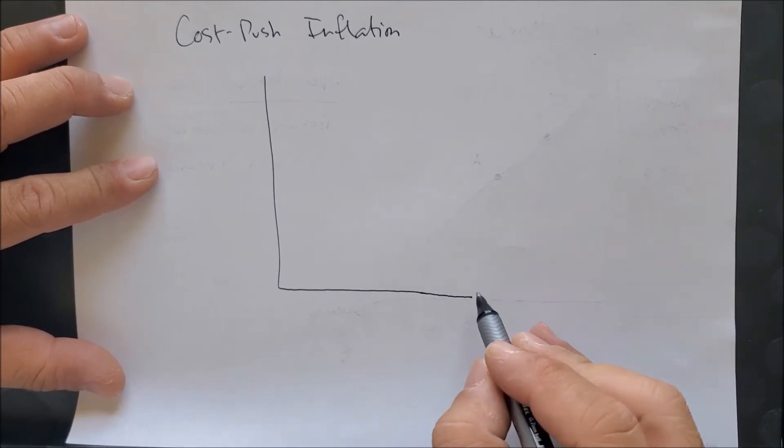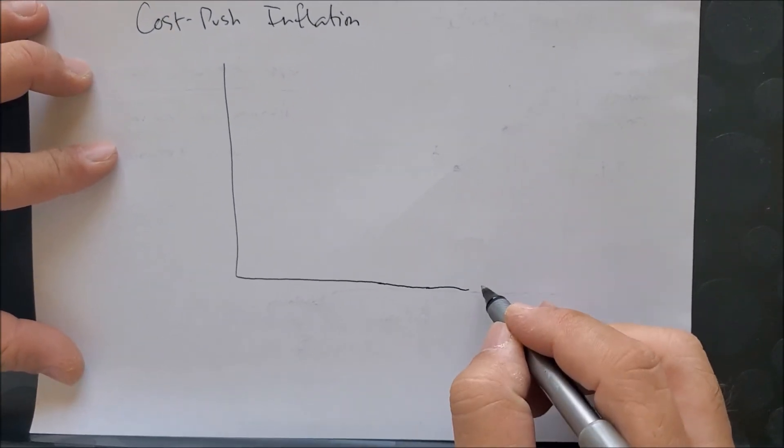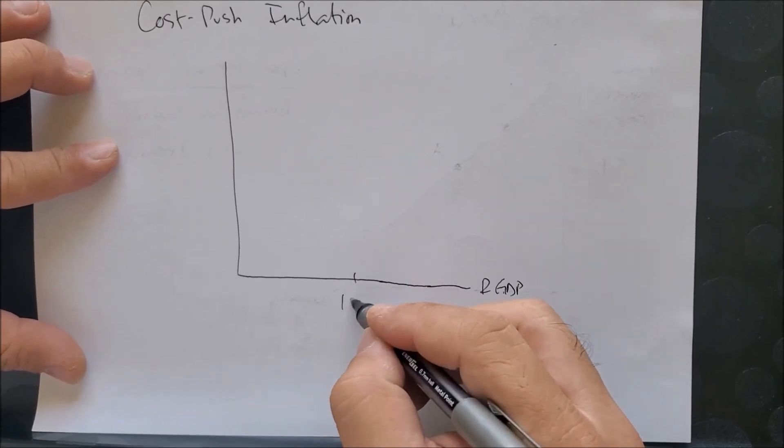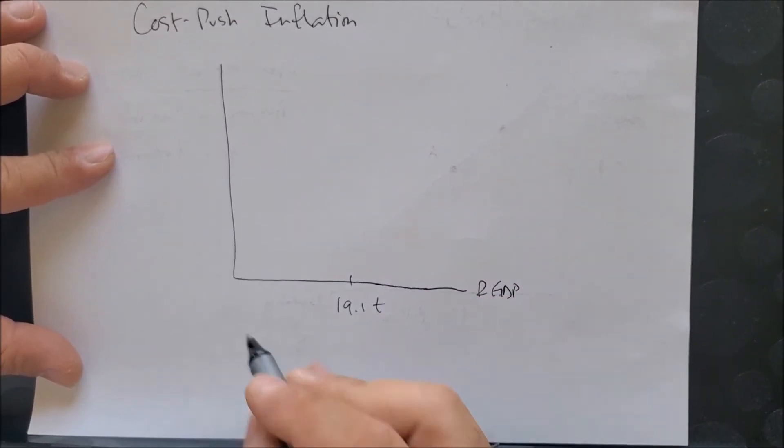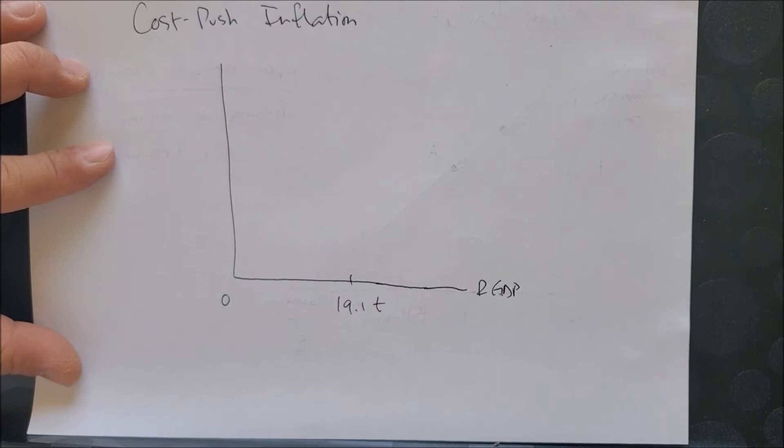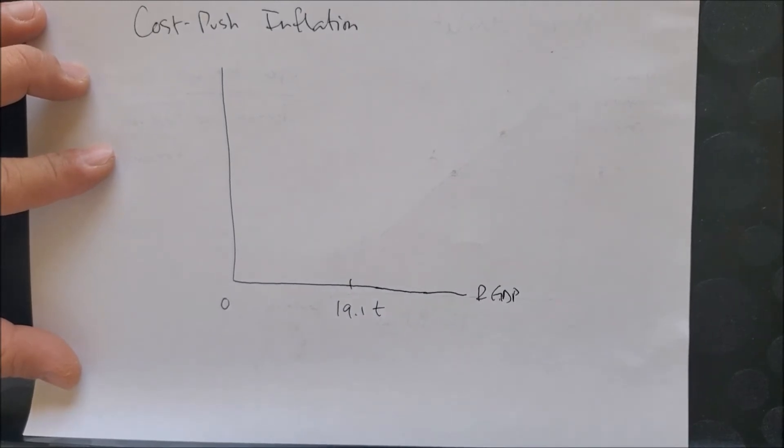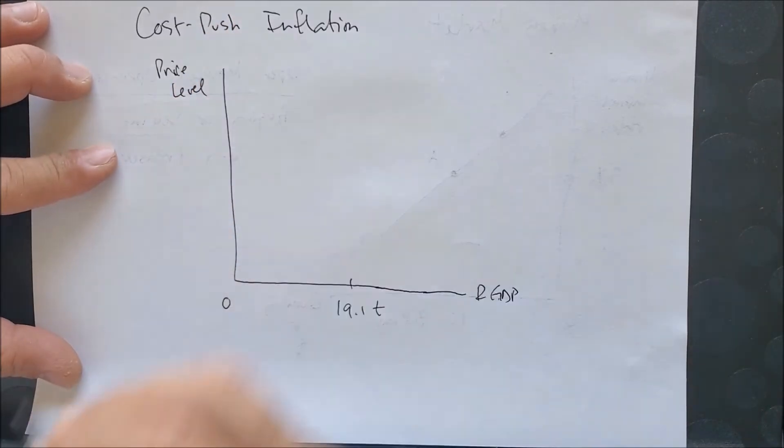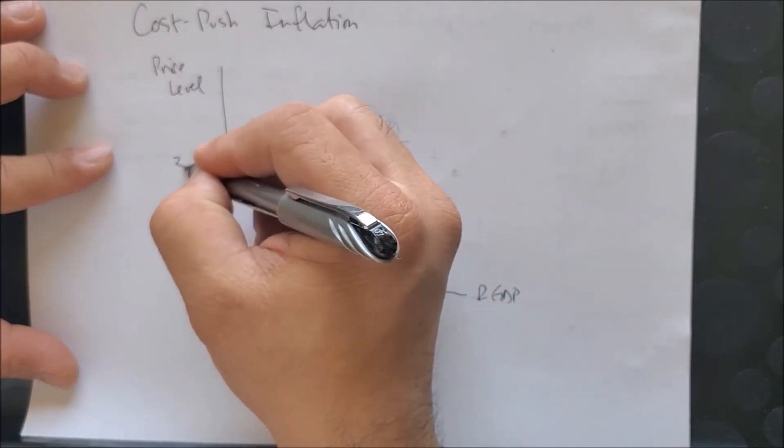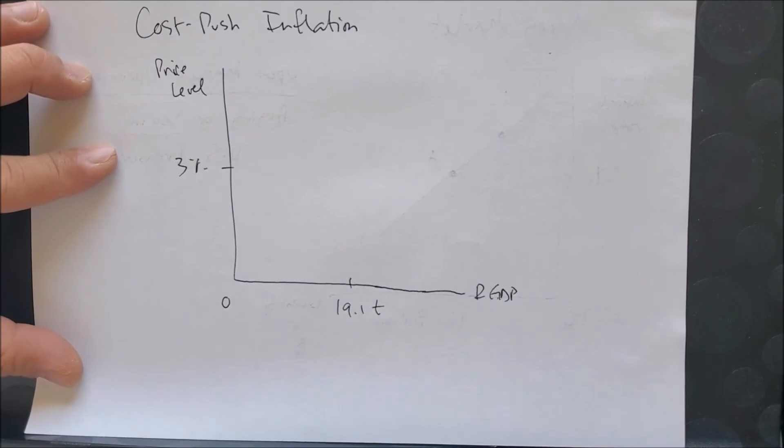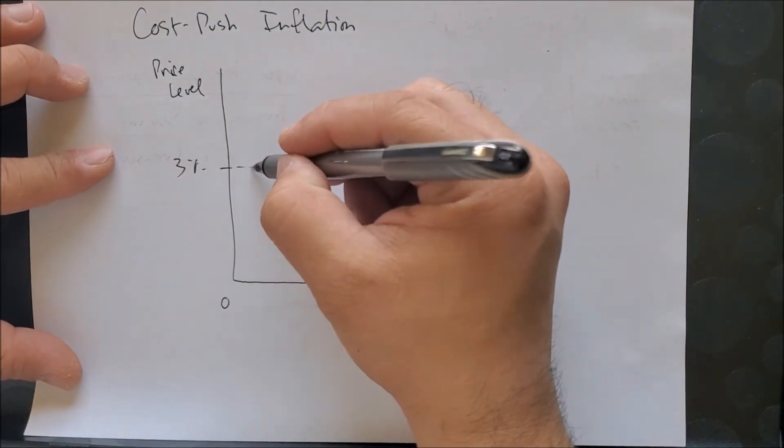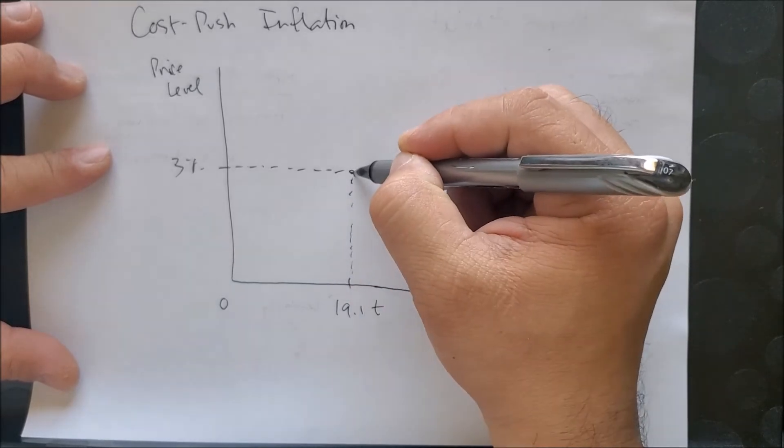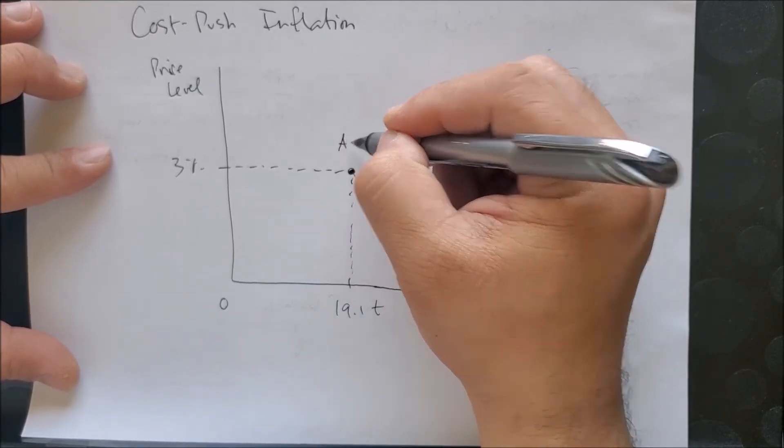On the x-axis we label real GDP. Let's use 19.1 trillion dollars, our origin zero. On the y-axis we have the price level at three percent. We have our equilibrium point at 19.1 and three percent.